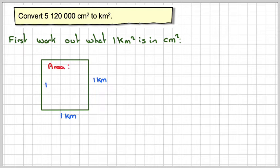So the area of that square will be 1 kilometer squared. Now 1 kilometer in meters is 1,000 meters, and each meter is worth 100 centimeters. So that length would also be 1,000 times 100. So similarly this one would also be 1,000 meters times 100 centimeters.